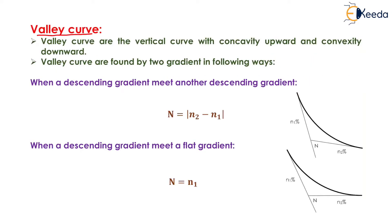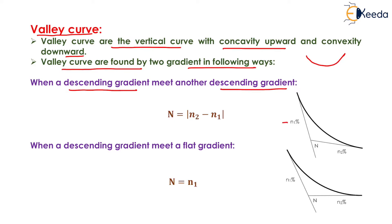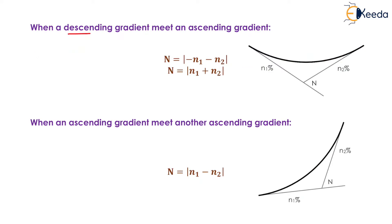The next curve is the valley curve. Valley curves are vertical curves with concavity upward and convexity downward. They are formed by two gradients: (1) descending meets descending (−N1%, −N2%): N = N2 − N1; (2) descending meets flat (N2 = 0): N = N1; (4) ascending meets ascending (+N1%, +N2%): N = N1 − N2.